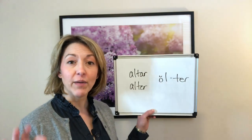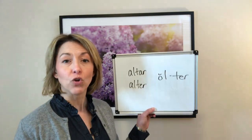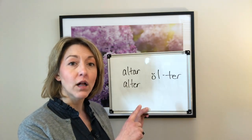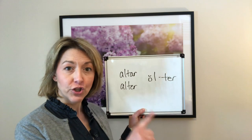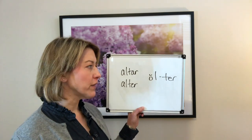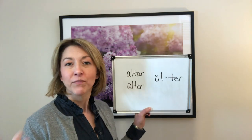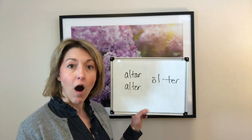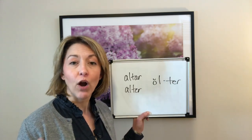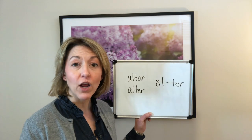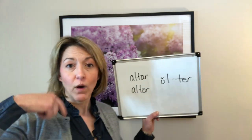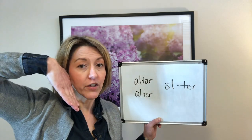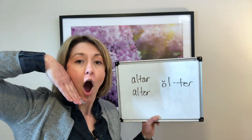To say these words correctly, we're going to think about two beats or two syllables: 'all' and then 'ter.' Let's start with that first syllable, 'all.' This part of the word sounds like the word 'all,' and to do that you're going to open your mouth in a wide oval shape. This will help you get the tip of your tongue down and the back of your tongue pulled up for that 'ah' sound.